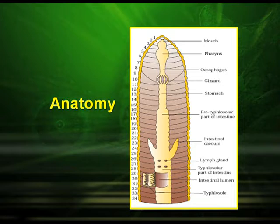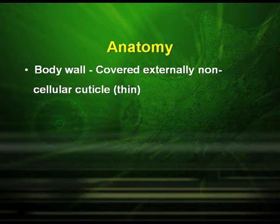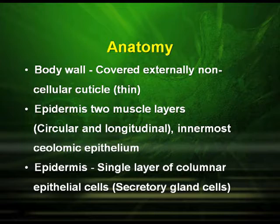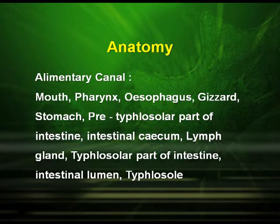In the anatomy of earthworm, studying the internal structures, the body is covered externally by a non-cellular cuticle which is thin layered. Below that is the epidermis and two muscle layers which are circular and longitudinal, and they have an innermost coelomic epithelium. The epidermis is made up of a single layer of columnar epithelial cells which are secretory in function. The alimentary canal includes organs like mouth, pharynx, esophagus, gizzard, and stomach.